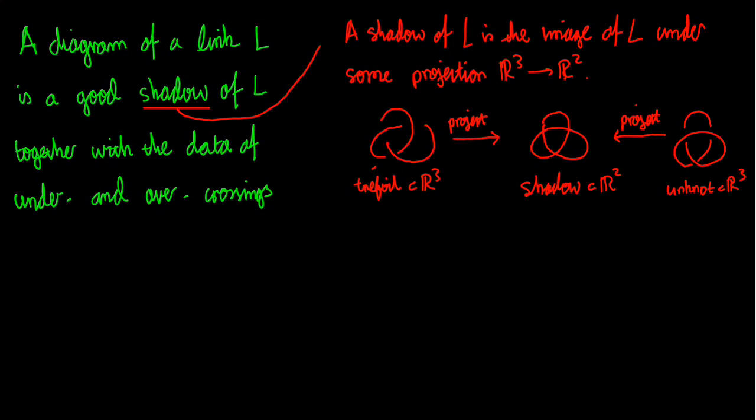First, what is a shadow of a link L? A shadow of L is the image of L under some projection from R3 to R2. What do we mean when we say we project from R3 to R2? That's just taking a linear map, a surjective linear map from R3 to R2, and taking the image of the subset L in R3 under that map. Basically, if the link is an object in R3, you choose a direction from which to look at it, and then you draw its picture in R2 from that direction.